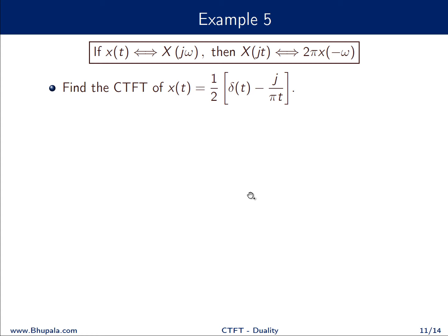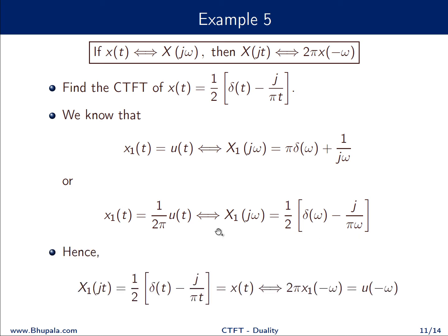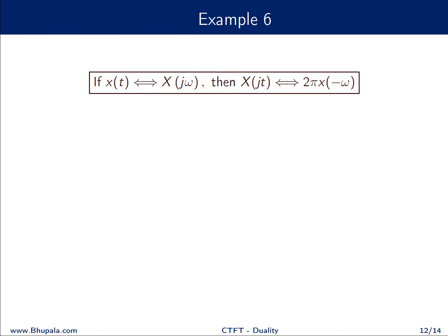Example 5: find the Fourier transform of x(t) = (1/2)δ(t) − j/(πt). We start with u(t), which has Fourier transform π·δ(ω) + 1/(jω). Scaling by 1/(2π) gives Fourier transform (1/2)δ(ω) − j/(πω). Using the duality property, this signal has u(−ω) as its Fourier transform.